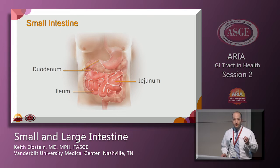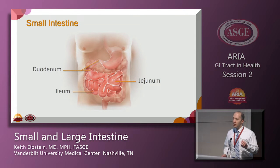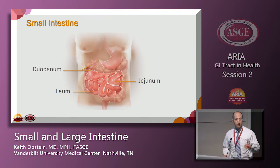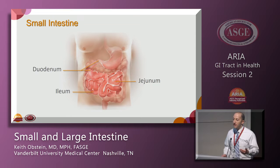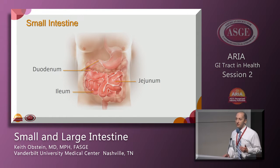The small intestine is composed of three major segments. The first part is the duodenum, the next part is the jejunum, and then the last part right before it enters into the large bowel — also known as the colon — is the ileum. I'll break each one of those down by parts.